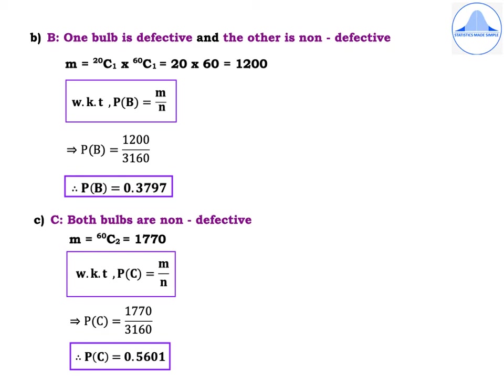Second subdivision, define event B as one bulb is defective and the other is non-defective. The word AND means multiplication. M = 20C1 into 60C1 = 20 into 60 = 1200. P(B) = M divided by N = 1200 divided by 3160. Therefore, P(B) = 0.3797.